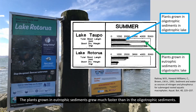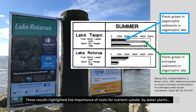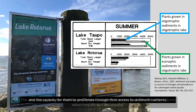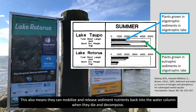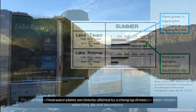The plants grown in eutrophic sediments grew much faster than those in the oligotrophic sediments. These results highlighted the importance of roots for nutrient uptake by water plants, and the capacity for them to proliferate through their access to sediment nutrients. This also means they can mobilize and release sediment nutrients back into the water column when they die and decompose.